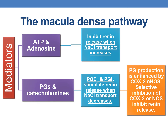Additionally, prostaglandin production is enhanced by COX-2 and nitric oxide synthase. Selective inhibition of COX-2 and NOS inhibits renin release.